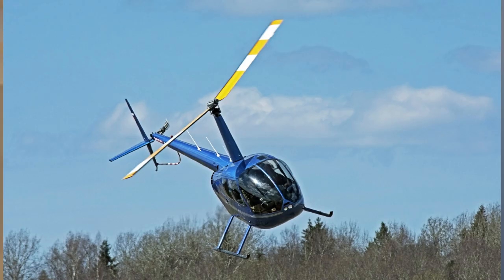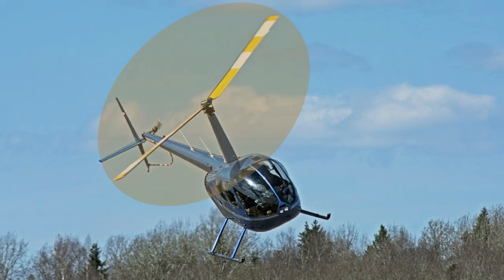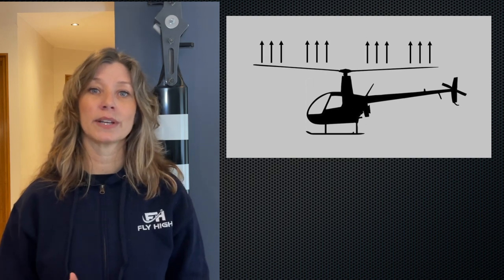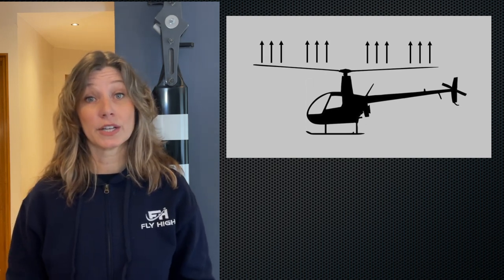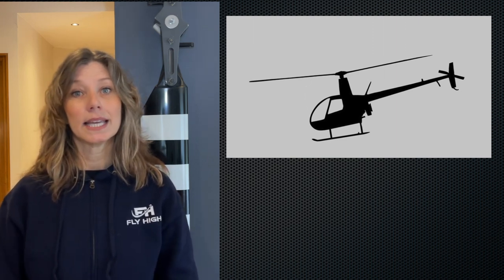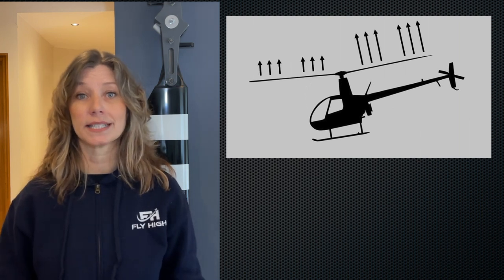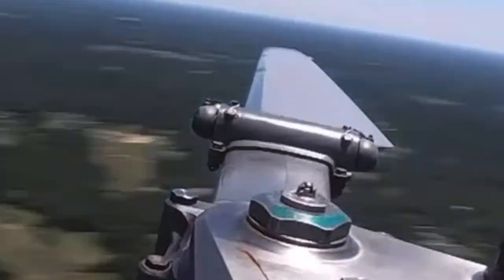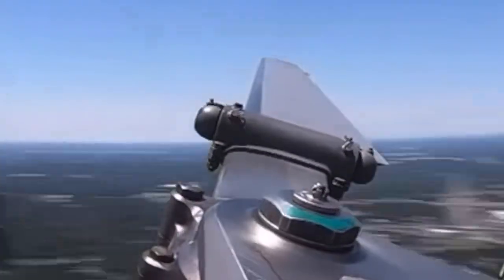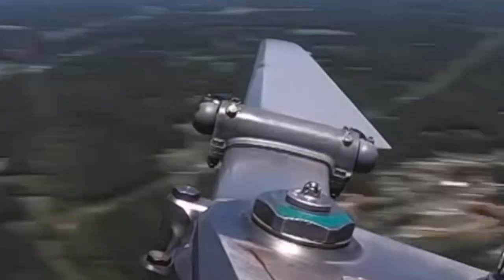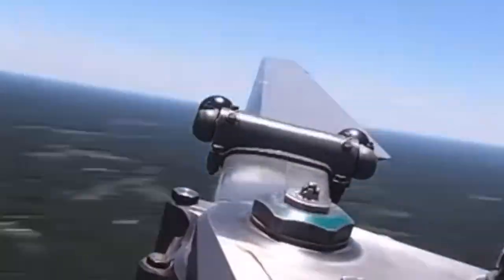The main rotor blades spin so fast that they take on the form of a solid rigid disc — we call this the rotor disc. When going straight up or down, the rotor disc is horizontal and has the same amount of lift all over. To fly in a certain direction, the pilot tilts the rotor disc in the direction he would like to go, generating more lift on the opposite side. For example, to go forwards he will add lift to the aft half of the rotor disc. The pitch angle of each individual blade is constantly changing as it turns around the hub, tilting the rotor disc in the direction of flight — be it forwards, sideways, or even backwards.